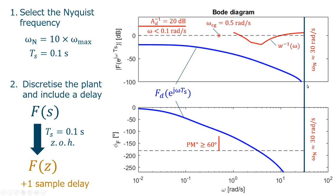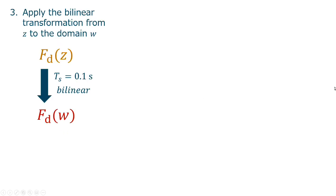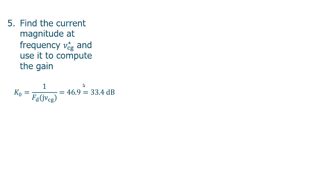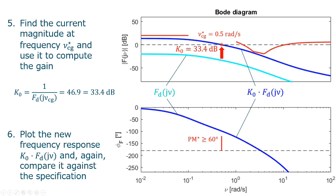But this is in the discrete time. So step three, we apply the bilinear transformation from Z to the domain W. And we again plot the frequency response now in the new frequency. And compare it against the specification. So this plot is almost the same, but now without the limitation of the Nyquist frequency. In step five, we find the current magnitude at the gain-crossing frequency and use it to compute the gain necessary to elevate the previous line to a point where it crosses 0 dBs at 0.5 radians per second. This gain is 46.9 or 33.4 dBs.